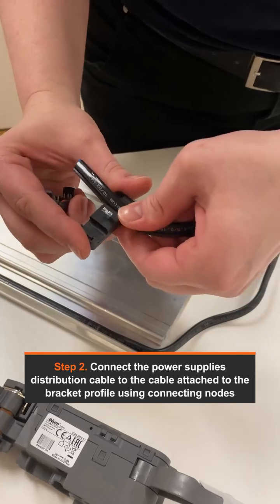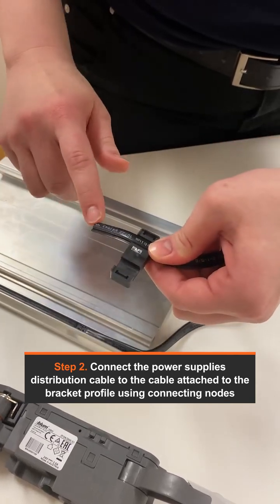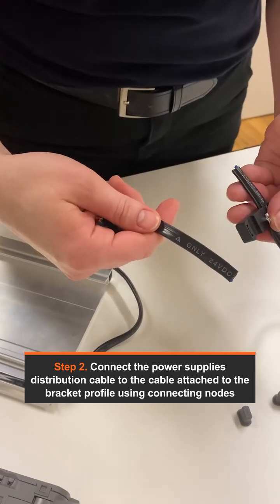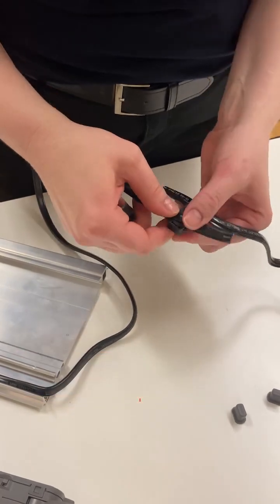Connect the power supply's distribution cable to the distribution cable that is attached to the bracket profile using connecting nodes, using end protectors at the end of each cable.